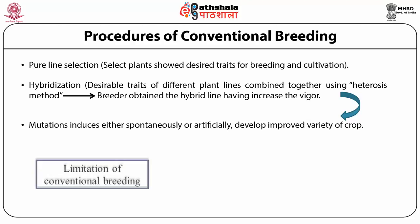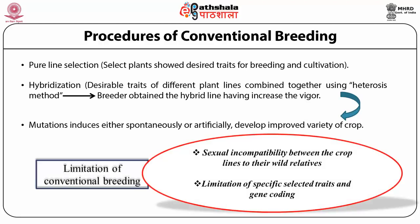Mutation is another method which induces spontaneous or artificial changes to develop improved varieties of crops. The limitations of conventional breeding include sexual incompatibility between the crop line and their wild species, and the limitation of specific selected traits and gene coding.